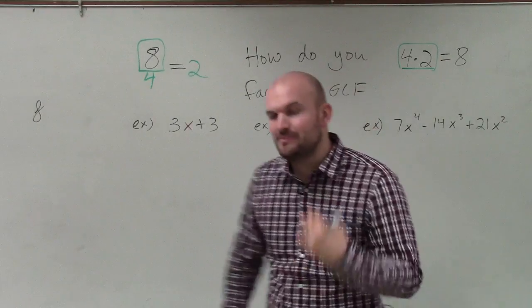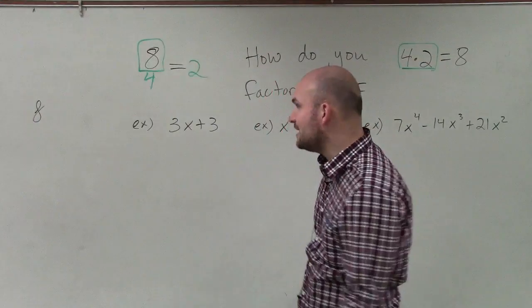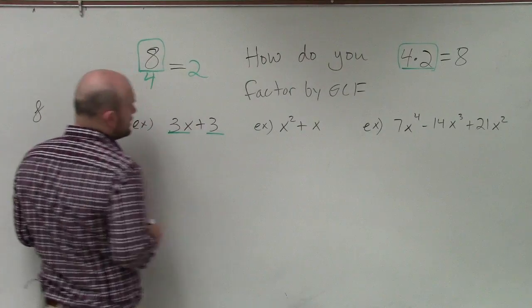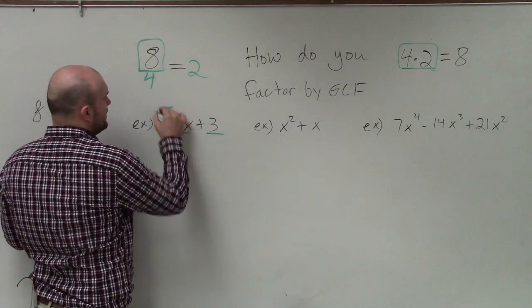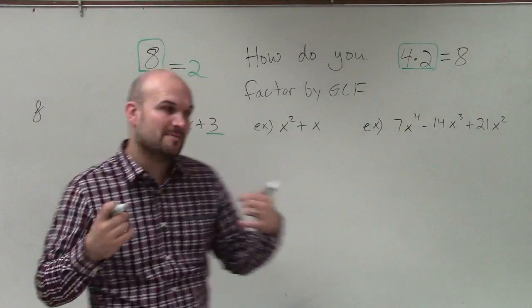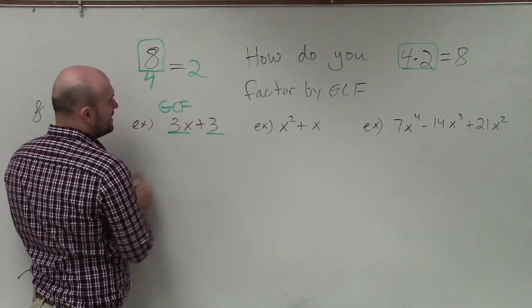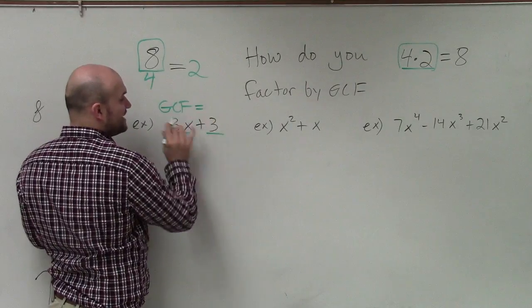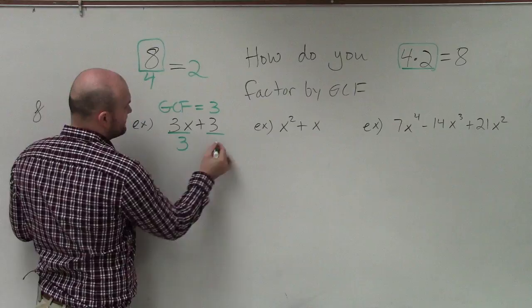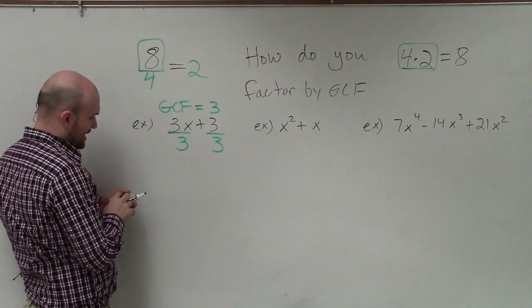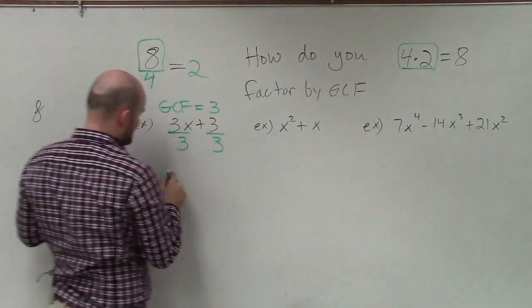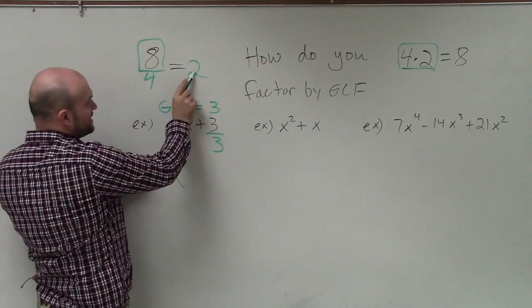So I need to determine a number or a variable that divides into both of my terms. And what we call that term is our GCF. And the GCF represents greatest common factor. Now you can see that the greatest common factor of this binomial here is just 3. So what I'm going to do is I'm going to divide by 3 just like I did with the number 8. Then since I'm dividing by 3, I'm going to rewrite that as the product times its quotient.